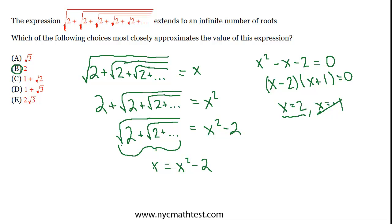Another way to go after this is to guess the answer and plug it in. Suppose at some point this thing ended — there was some final term that was literally just the square root of 2. The square root of 2 is about 1.41. So if you plug that in, you get 2 plus 1.41, which is 3.41. You take the square root of that — that's something a little less than 2, probably like 1.6 or 1.7.